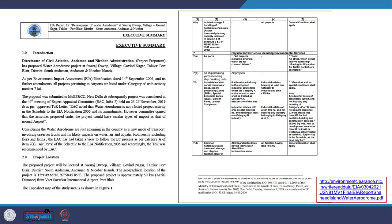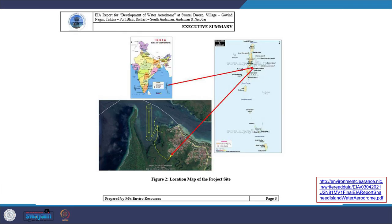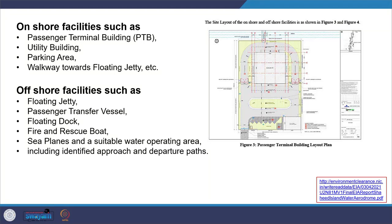Looking at the project location, you can see the Andaman and Nicobar Islands and where the project is located, including how the water runway would be situated. The project would have onshore facilities such as a passenger terminal building, utility building, parking area, and walkway towards a floating jetty, as well as offshore facilities such as a floating jetty, passenger transfer vessel, floating dock, fire and rescue boat, seaplanes, a suitable water operating area, and approach and departure paths.